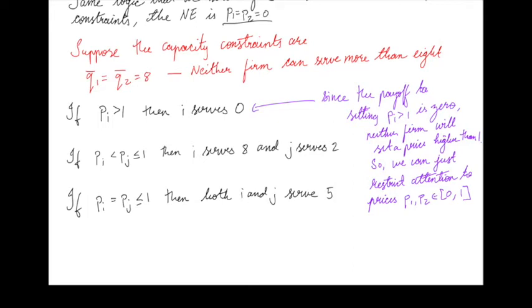Notice that setting a price greater than 1 gives you a payoff of 0, because you'll get 0 demand, so revenue is 0. If you set a price of 1, you're guaranteed a positive payoff, because no matter what price your opponent sets, there will be at least 2 units of demand left over for you. So you can get a payoff of at least 2 by setting a price of 1. Prices above 1 are strictly dominated by the price 1, so we can delete them and restrict attention to prices between 0 and 1.